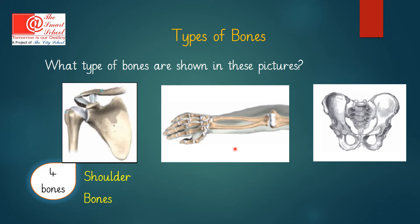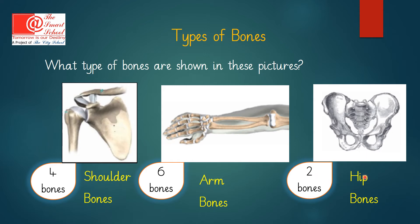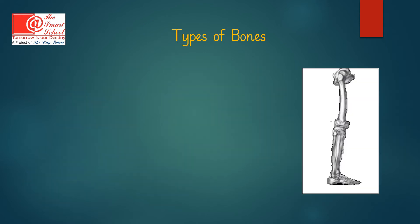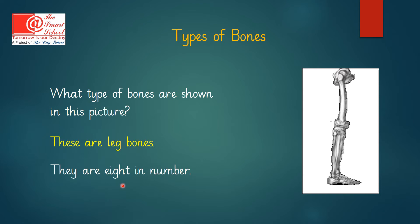These are the Arm Bones and there are 6 Arm Bones which join together to make an Arm. These are Hip Bones — 2 in number — they join together to make our Hips. These are Leg Bones, 8 in number, and they join together to make our Leg.